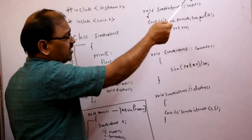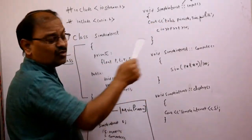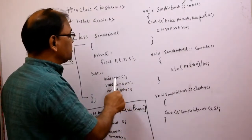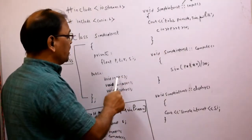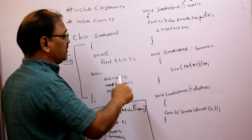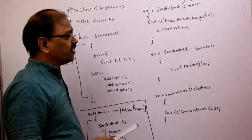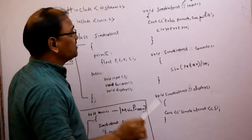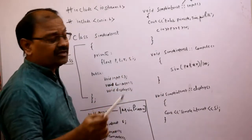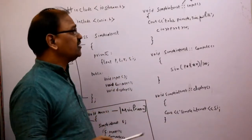When writing outside the class along with the scope resolution operator, you are not supposed to change the member function name. Next, we are inputting the three values — principle, time, and rate — to calculate the simple interest. We have written: cout, enter principle, time and rate.